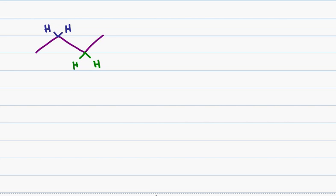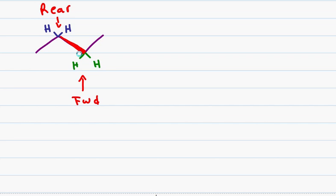When you look at this structure, we'll assume that the green hydrogens are on the forward carbon and the blue hydrogens are on the rear carbon. Looking at this structure, I will imagine that the green carbon is coming forward, so I draw a bold wedge putting that in the front. Now imagine you take your hand and wrap it around the center — that will be the circle for your Newman Projection.